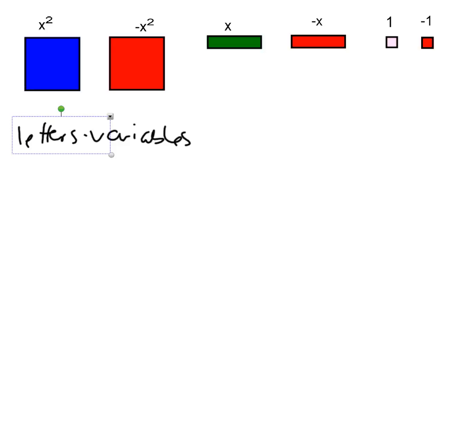Then you have these single tiles that don't have letters. Things that don't have letters, those are called constants.